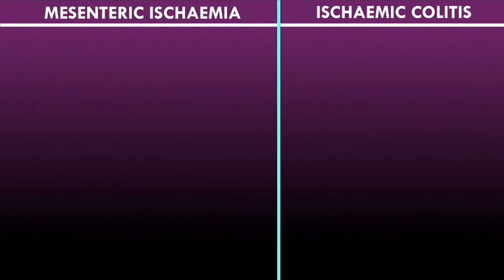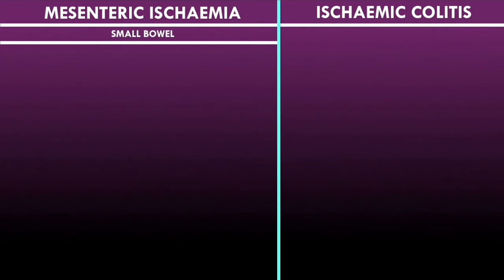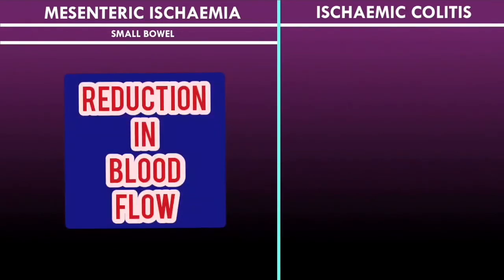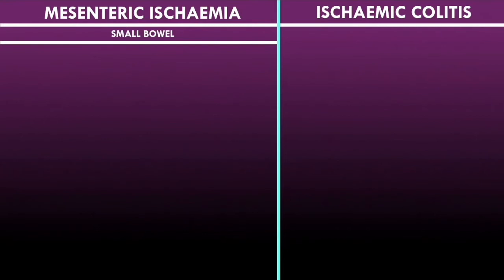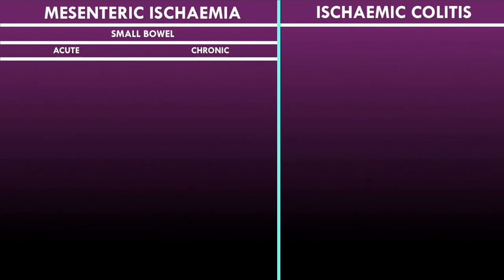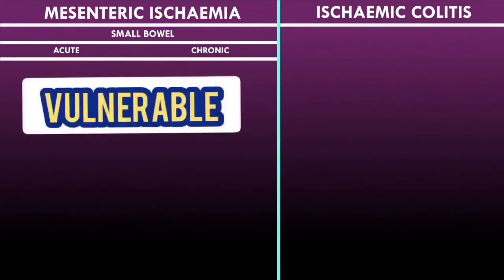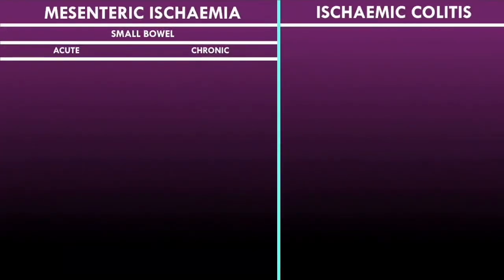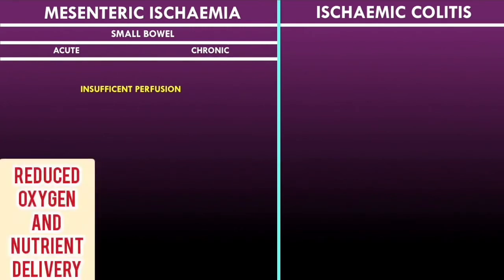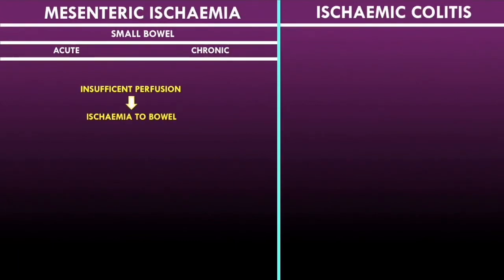Mesenteric ischemia affects the small bowel, characterized by a reduction in blood flow to the small bowel. This reduction can occur acutely or can be a chronic problem, so mesenteric ischemia is divided into acute and chronic forms. The small bowel has a very rich blood supply and is very vulnerable to ischemic injury. Insufficient perfusion leads to reduced oxygen and nutrient delivery to the cells of the bowel.